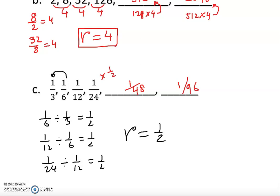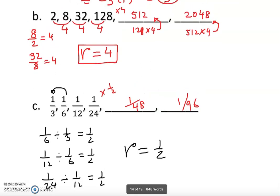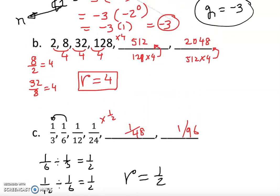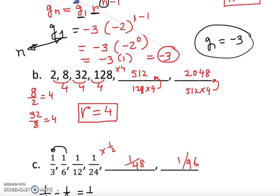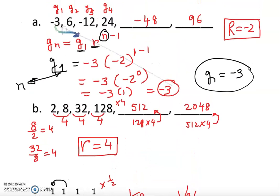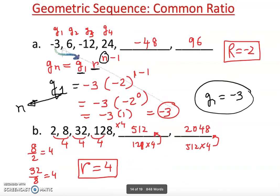I hope you understand how to find terms in a geometric sequence, find missing numbers, and use the general term or general formula. Thank you.